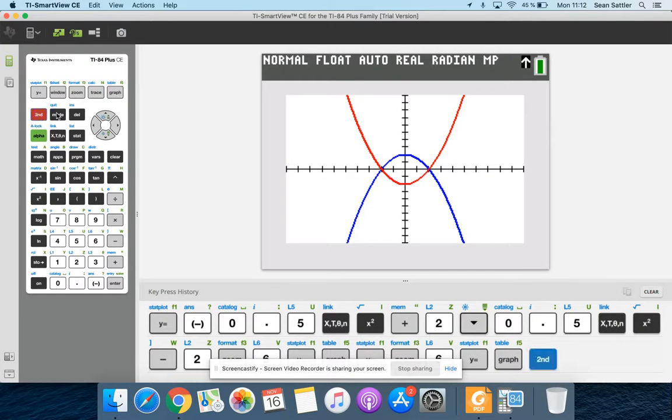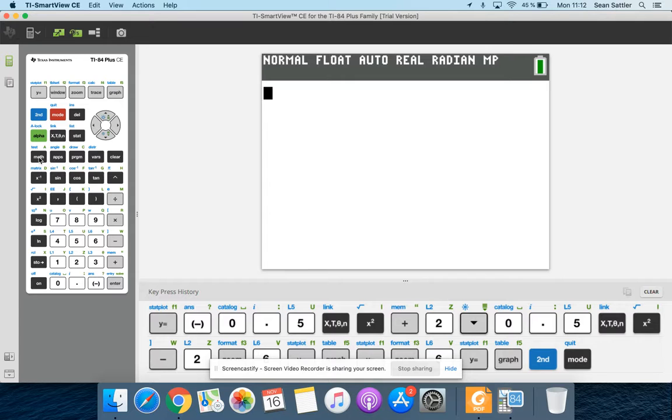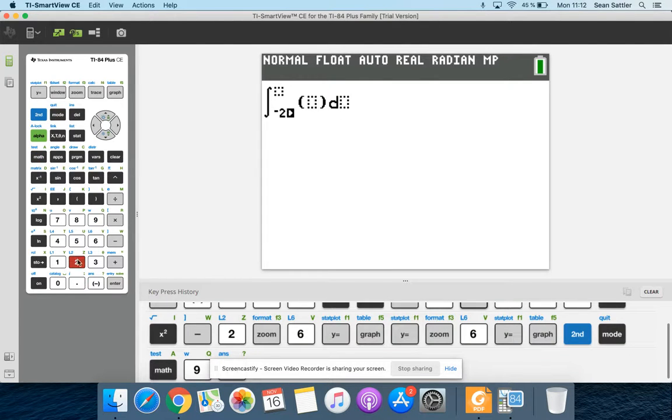So go to second quit and go to the home screen. Math nine opens up our integral from negative two to positive two. And then I'm going to do negative x squared plus four with respect to x.